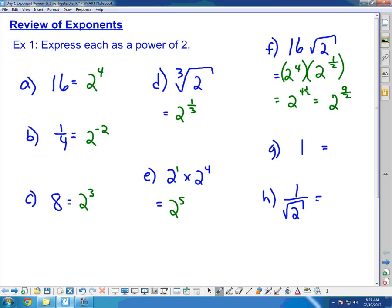What about G? The answer is 1. Yes, good. So 2 to the power of 0. Okay, remember anything to the power of 0 is 1. And so 2 to the power of 0 would be 1 as well.